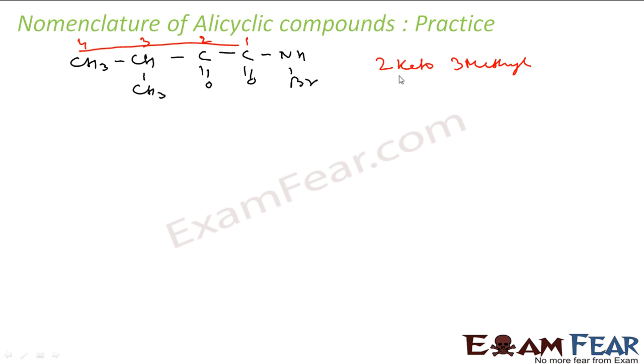So it will be 2-keto. At three position, I have methyl. I wrote keto first before methyl because K comes before M in the alphabet. So 2-keto, 3-methyl.